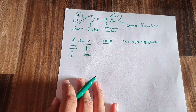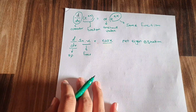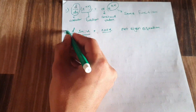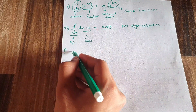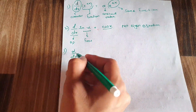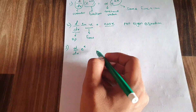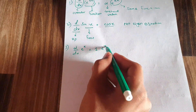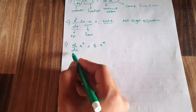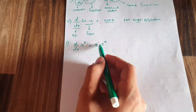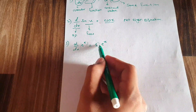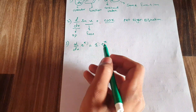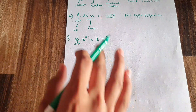Taking example number 3: d/dx · e^x. The derivative comes out to be equal to 1 · e^x. So d/dx is the operator, e^x is the function, 1 is the constant eigenvalue, and e^x is the same eigenfunction repeated. This equation follows the eigenequation structure, so it is an eigenequation.